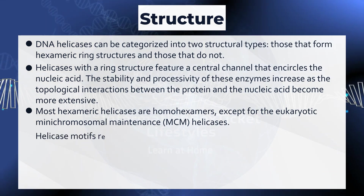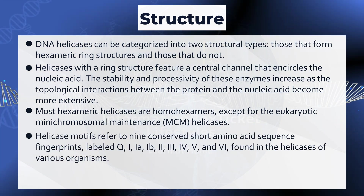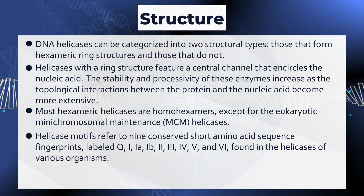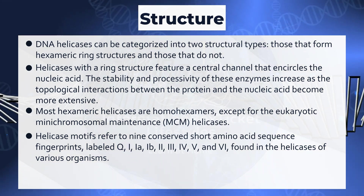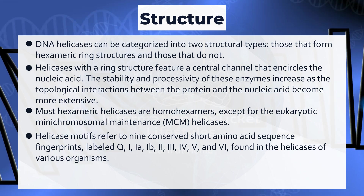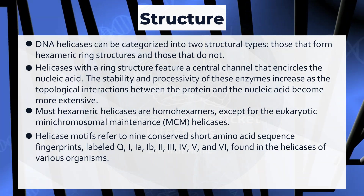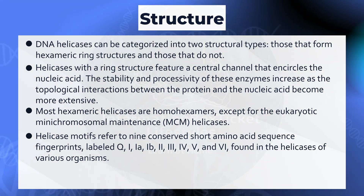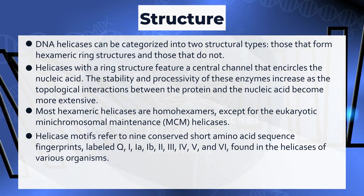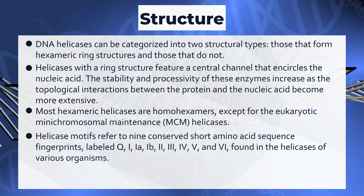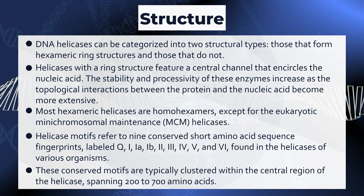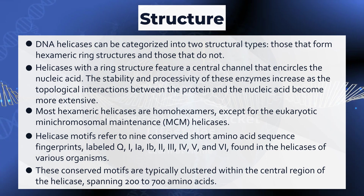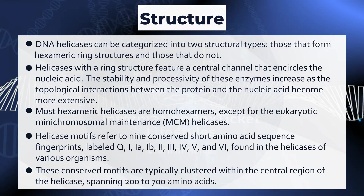Helicase motifs refer to nine conserved short amino acid sequence fingerprints, labeled Q, 1, 1A, 1B, 2, 3, 4, 5, and 6, found in the helicases of various organisms. These conserved motifs are typically clustered within the central region of the helicase, spanning 200 to 700 amino acids.